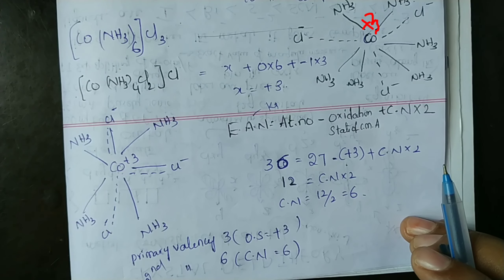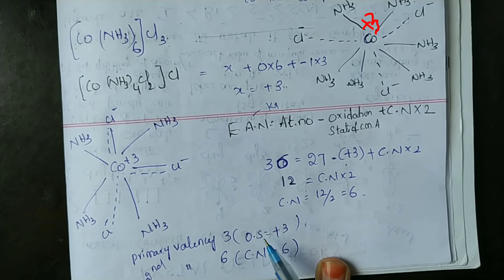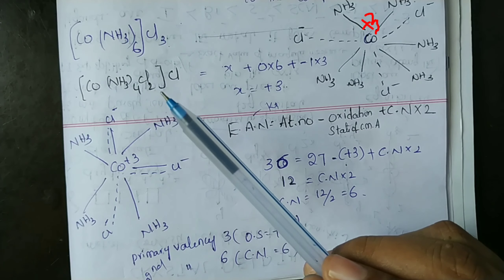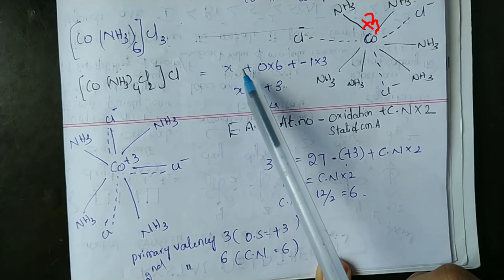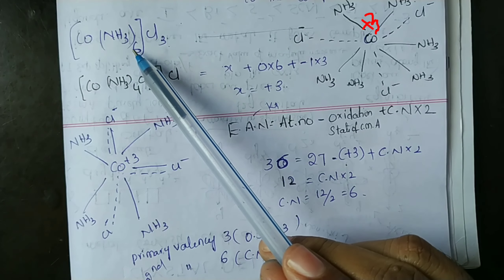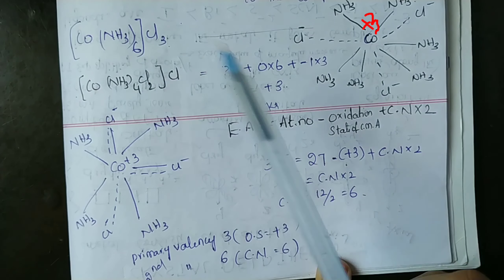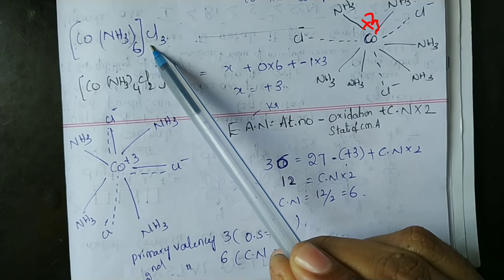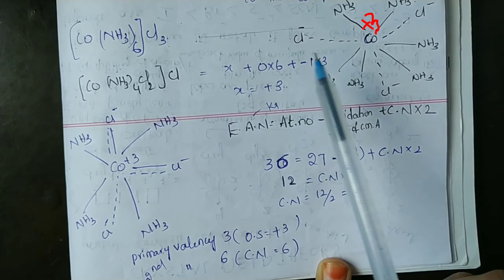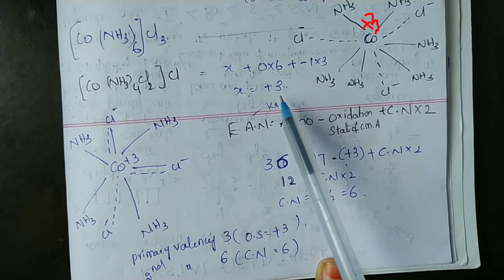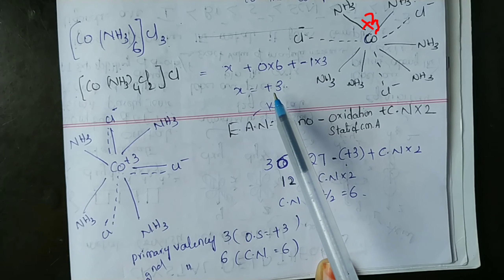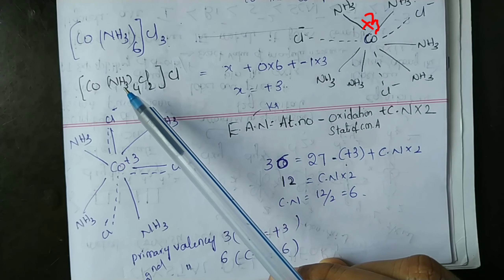To find the oxidation state of the metal atom: X plus neutral ligand (0) times 6, plus (−1) times 3. X equals 3 plus 3... wait — solving gives X equal to plus 3. So, +3 is the oxidation state of the metal atom cobalt.